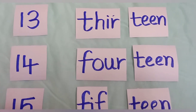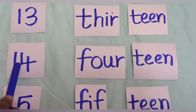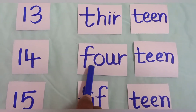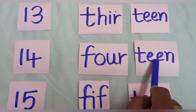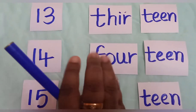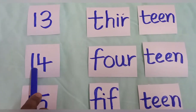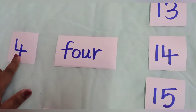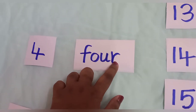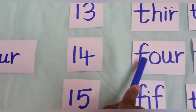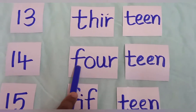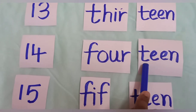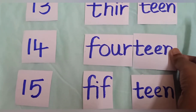Next one is 14, written as 1 and 4. You already know the spelling of 4, right? F-O-U-R. So for 14, you write the 4 spelling first — F-O-U-R — and then add teen: T-E-E-N. That gives you fourteen.